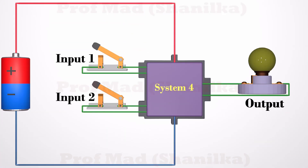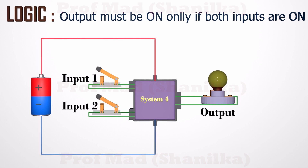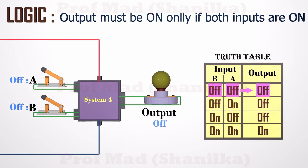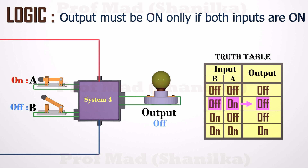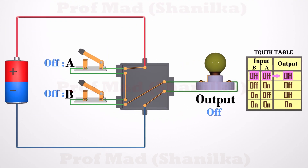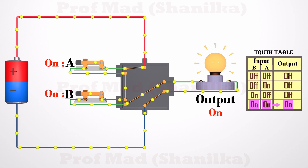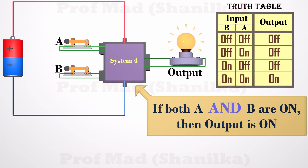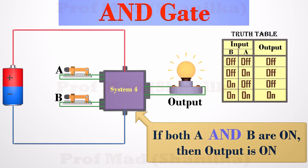Let's try another one. Think we need to turn on the light only if both switches A and B are on. If both A and B are off, the light must be off. If A is on and B is off, the light must be off. If A is off and B is on, the light must be off. If A and B are both on, then the light must be turned on. Both A and B must be turned on to turn on the bulb, so this logic is called AND logic.